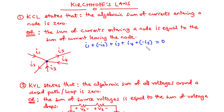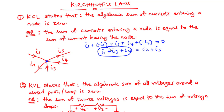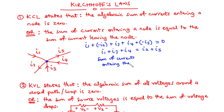Now let's rearrange the terms so that those with negatives are transposed to the right-hand side. We are left with i1 plus i3 plus i4 on the left-hand side, and that is equal to i2 plus i5. If you look critically at the left-hand side, you realize it is the sum of currents entering the node — i1, i3, and i4.